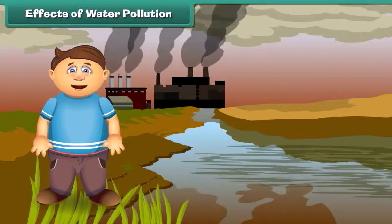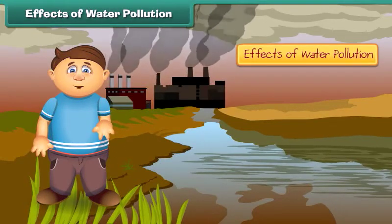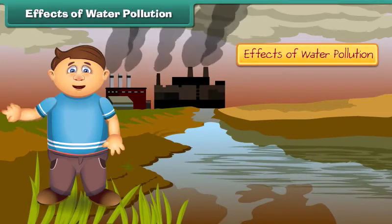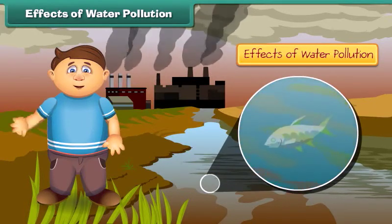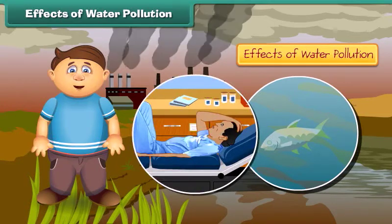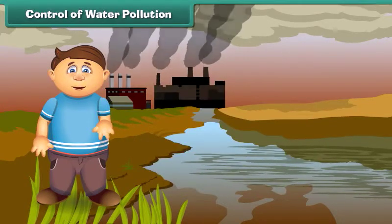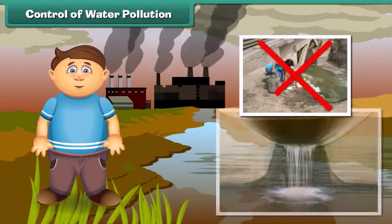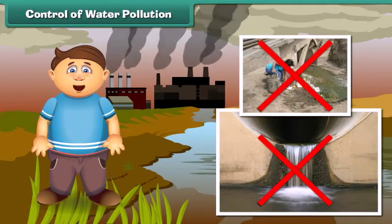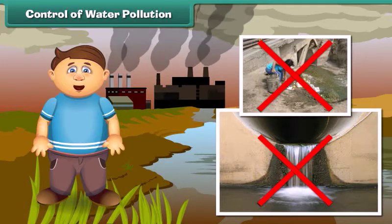We should not drink this water as it contains germs and may result in diseases. Poisonous chemicals released from factories and industries enter water bodies, due to which marine life is getting affected. If we consume such fishes, we will also fall ill. To control water pollution, we should not dispose garbage and harmful chemicals directly into ponds, lakes and rivers.